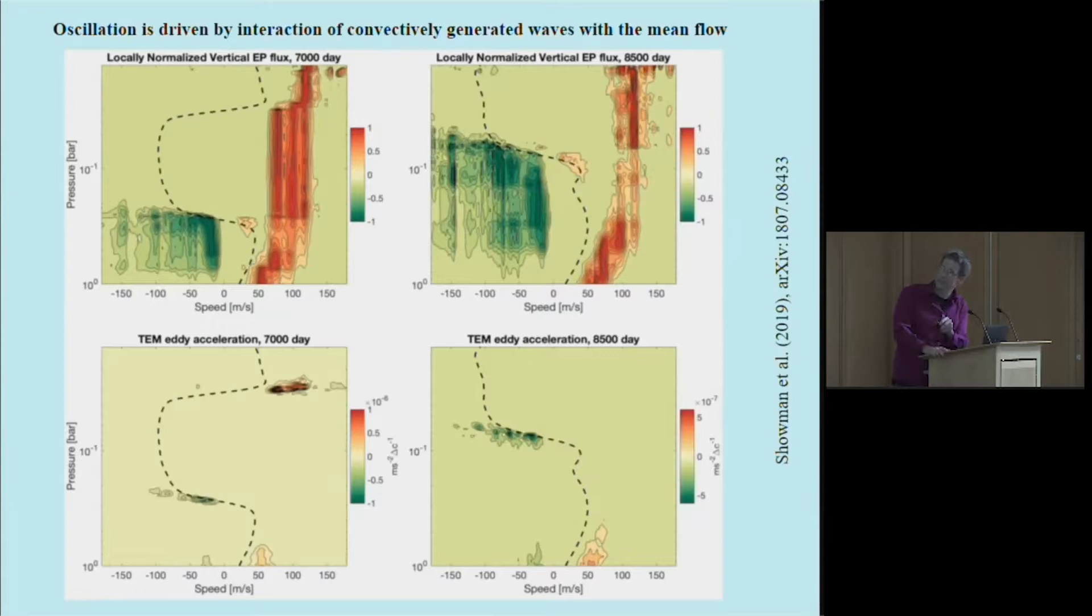Eastward propagating waves are perfectly happy to just shoot right up through that region and they get up to the base of this eastward jet. Then they undergo the same kind of process, where they approach a region where the wind speed is similar to their phase speed, namely eastward in this case. The waves slow down, their wave crests smash together, and they get damped. Crucially, they deposit eastward momentum.